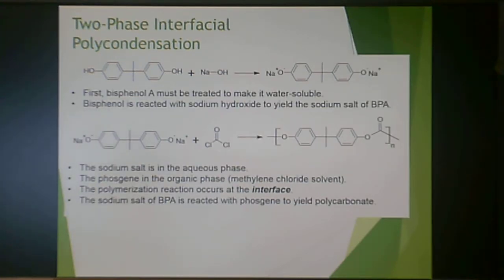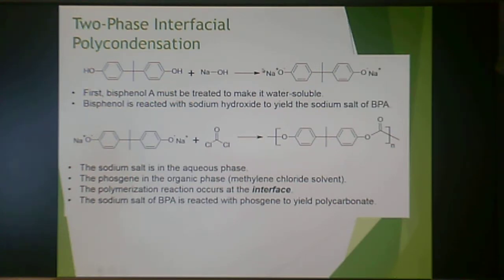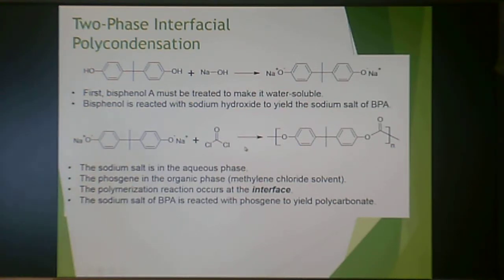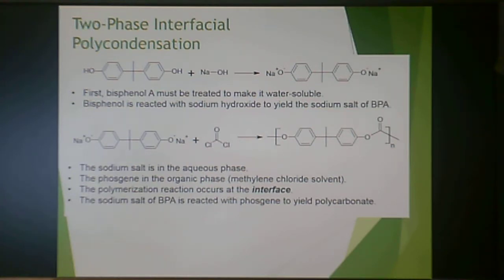In a two-phase interfacial polycondensation, you first take bisphenol A and treat it with sodium hydroxide to form the water-soluble sodium salt of bisphenol A. The sodium salt goes into the aqueous phase, while phosgene in methylene chloride solvent goes into the organic phase. The polymerization reaction occurs at the interface between the two solvents — similar to where oil meets water — producing polycarbonate at that interface.